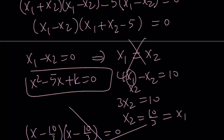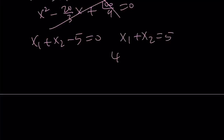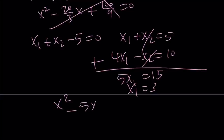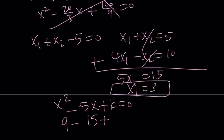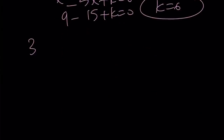The given conditions eliminate that case, so we look at the second condition: x1 plus x2 minus 5 equals 0, meaning x1 plus x2 equals 5. This is great because we also have the other relationship 4x1 minus x2 equals 10. Adding these two equations gives 5x1 equals 15, so x1 equals 3. Plugging 3 into the original equation: 9 minus 15 plus k equals 0, giving k equals 6 again.